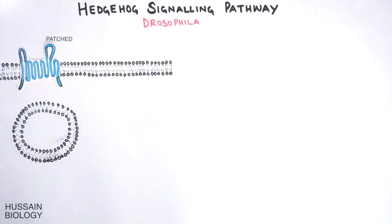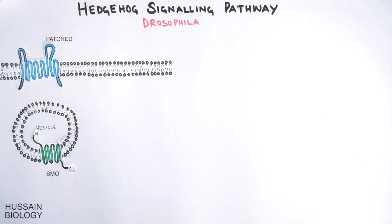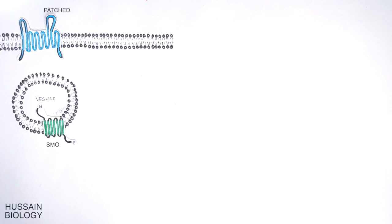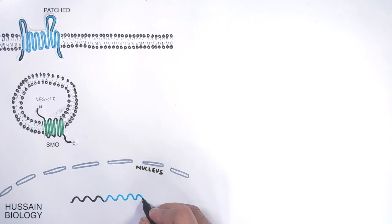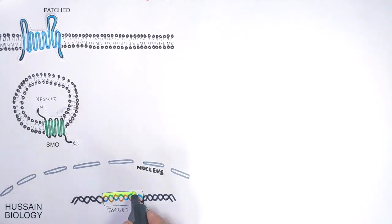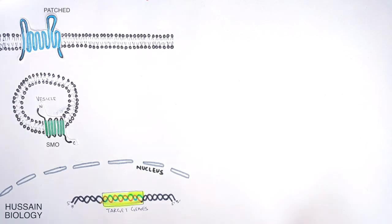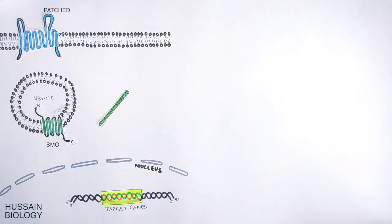These vesicles have another regulatory protein in their membrane called the Smoothened protein, or Smo protein. Moreover, we have the nucleus in which DNA has got target genes for hedgehog signaling, and then we have microtubules present in the cell.